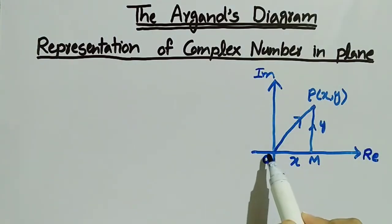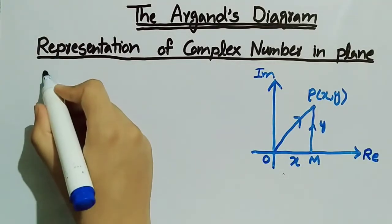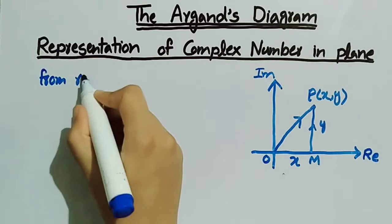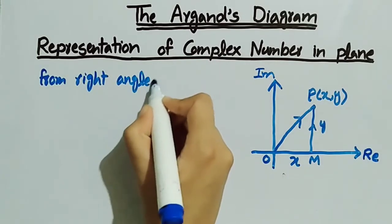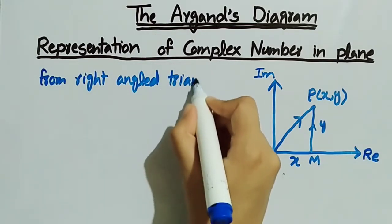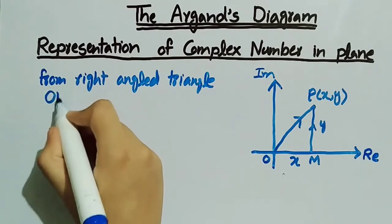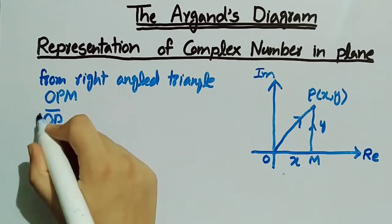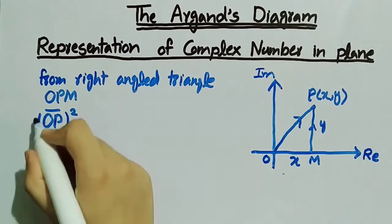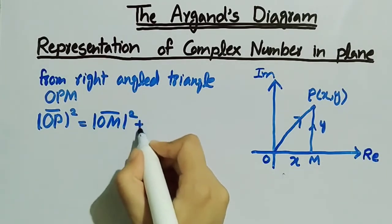We have joined the origin O to the point P. Then from the right-angled triangle OPM, we can write: OP² = OM² + MP².